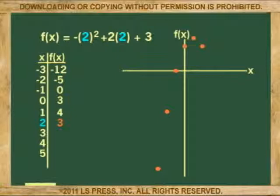At 2 is 3. At 3 is 0. At 4 is negative 5. At 5 is negative 12, and so on.